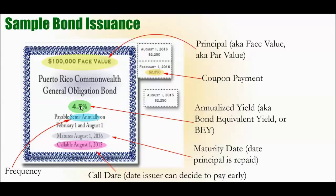The next item is the interest rate on the bond. You see 4.5%, and this is called the yield, or the annualized yield, or the bond equivalent yield. The interest payments are payable semi-annually, so you're actually making two payments. That total will be 4.5%, so even though it's paid semi-annually, each payment is basically 2.25%.